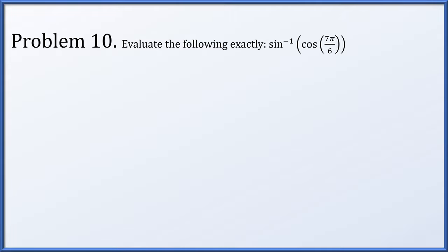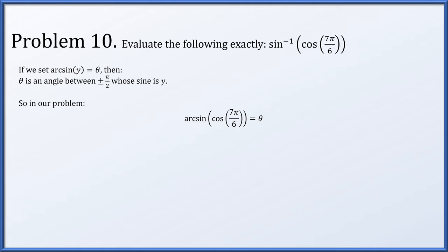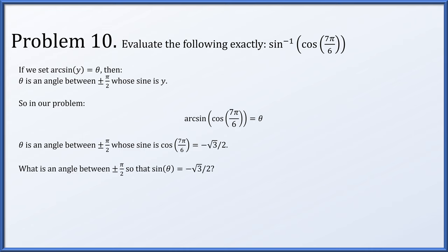Problem 10: evaluate exactly the arcsine of the cosine of seven pi over six. Setting arc sine of y equal to theta means theta is an angle between plus or minus pi over two whose sine is y. So theta is an angle between plus or minus pi over two whose sine equals the cosine of seven pi over six, which is minus root three over two. Looking in quadrants one and four between plus or minus pi over two for an angle whose sine is minus root three over two gives exactly minus pi over three.